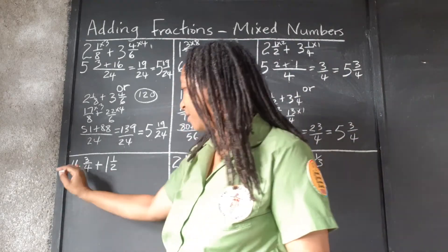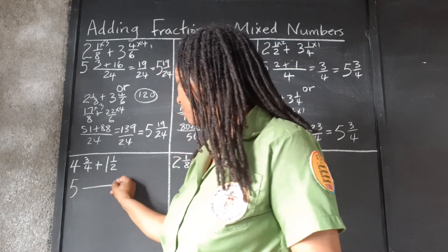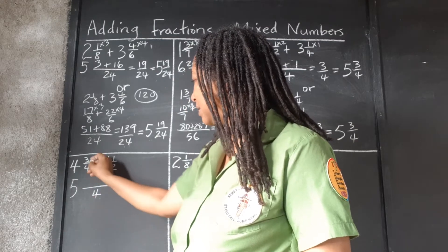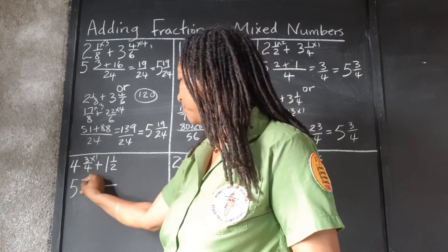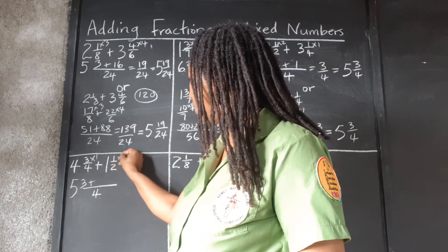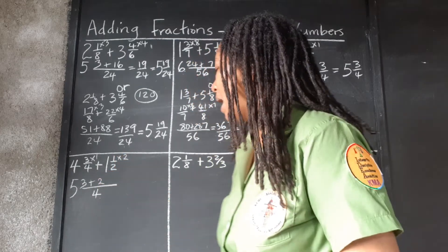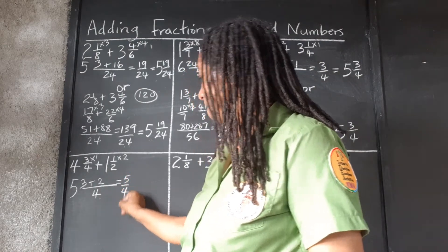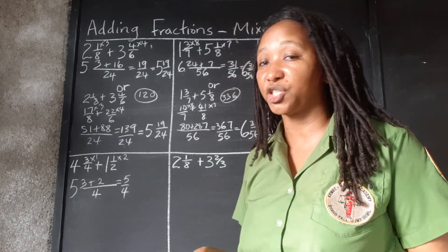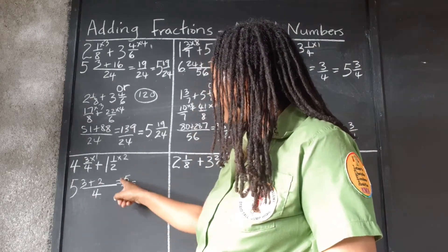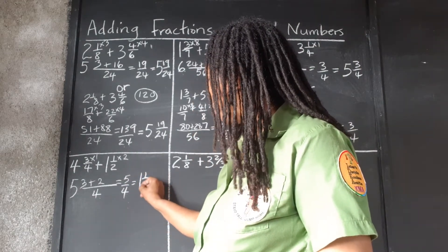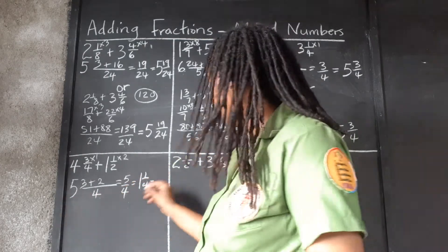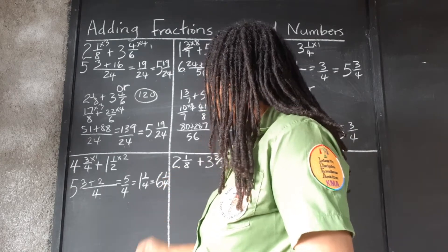Alright, so let's work this one in the first method. 4 plus 1, 5. The LCM of 4 and 2 is 4. 4 goes into 4 1 time. 3 once, 3. 2 goes into 4 2 times. 1 times 2, 2. And we end up with 3 plus 2, 5 over 4, which is an improper fraction. So we need to change that to a mixed number. That is, 4 goes into 5 1 time, remainder 1 over 4. And finally, we add the 1 to the 5 that we have put to the side. That's 6¼.